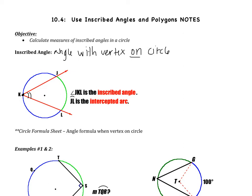When you have an inscribed angle, the arc that contains it is called the intercepted arc. In this case, arc JL — this arc right here — is called the intercepted arc. Besides knowing what an inscribed angle is, you have to know that the measure of the angle is one half the measure of the intercepted arc.